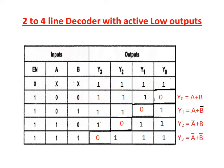For the 0,0 input condition, output Y0 is selected and is represented as 0; remaining outputs are 1. For 0,1 input, Y1 is selected and represented as logic 0. For 1,0 input, Y2 is selected and shown as 0. For 1,1 input, Y3 is selected and shown as 0. So the Boolean expressions are: Y0 = A + B, Y1 = A + B-bar, Y2 = A-bar + B, Y3 = A-bar + B-bar.